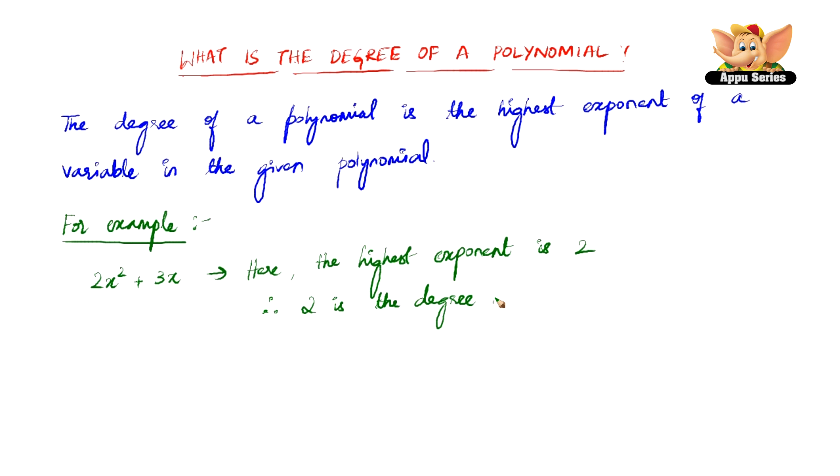Let us consider another example: x to the power 4 plus x cubed plus 2x plus 5. Here, the highest exponent is 4. Therefore, 4 is the degree of the given polynomial.